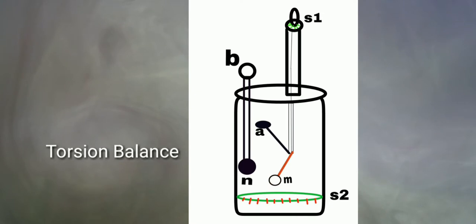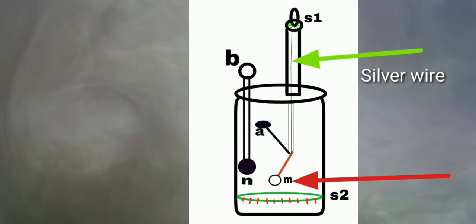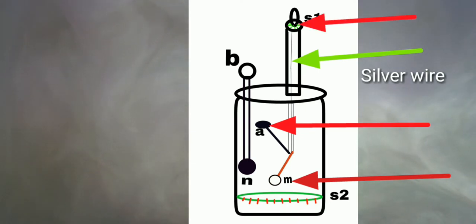A light arm consists of a pith ball named M, is suspended inside a glass case by means of a silver wire. The other side of light arm named A is attached to the inner side of glass. The upper end of the silver wire is fastened to a brass top.